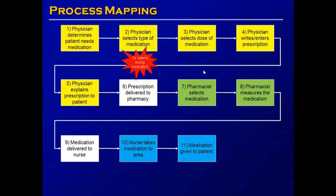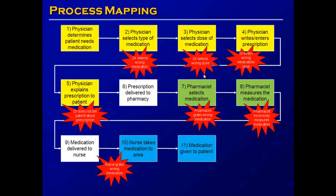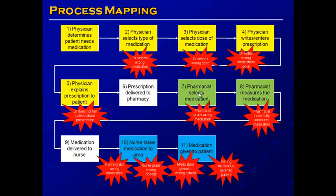For example, the physician could select the wrong medication or the wrong dose, or write down the wrong medication or dose. The physician may not tell the patient about the prescription. The pharmacist could grab the wrong medication or incorrectly measure the medication. The nurse may grab the wrong medication or wrong dosage. The medication may be given to the wrong patient, or the wrong medication may be given to the patient. We've now picked out errors in the process that may lead to medication errors impacting patient safety. We can feed these back into the cause map.